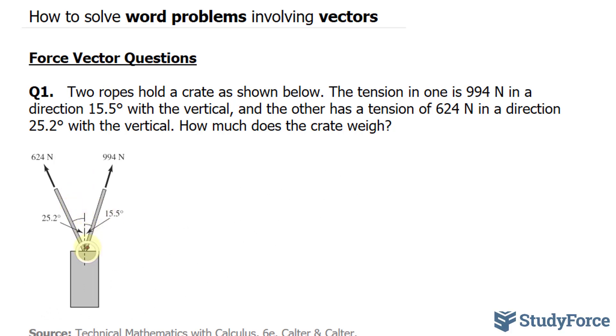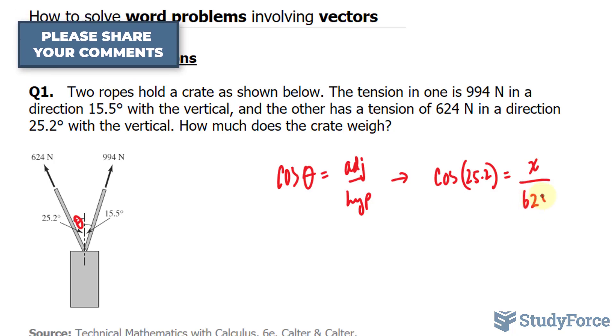Let's find the vertical component of 25.2 degrees and the magnitude of 624. To do this we'll be using cosine. Cosine of an angle relates the adjacent length with the hypotenuse. If we consider this as theta, this is the adjacent length and our hypotenuse is known. So we'll substitute 25.2 into our theta. Adjacent is what we're looking for, let's call it x. And the hypotenuse is the magnitude, 624.